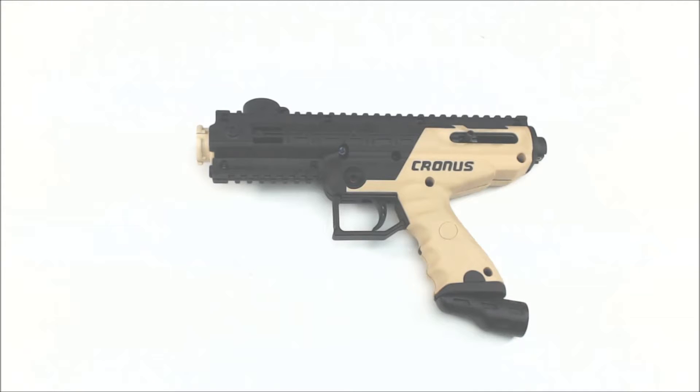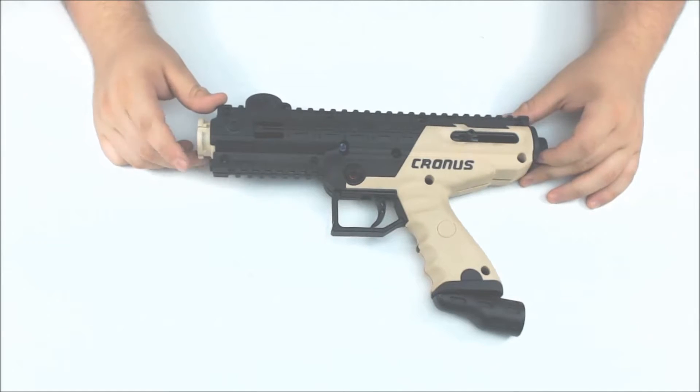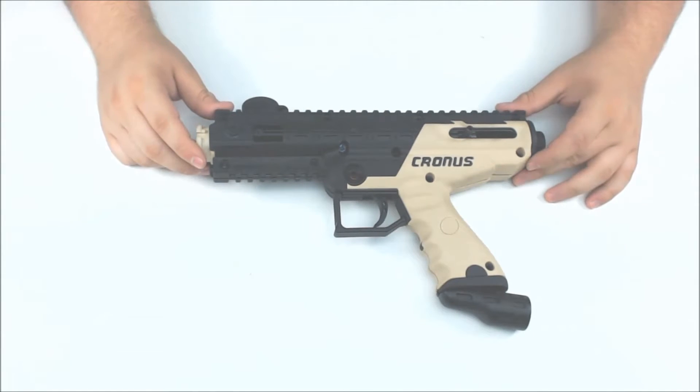We're going to learn how to replace a broken power tube on the Cronus. It'll be pretty similar for the 98s, the A5s, all that stuff is pretty much the same. This one's being a little bit different.